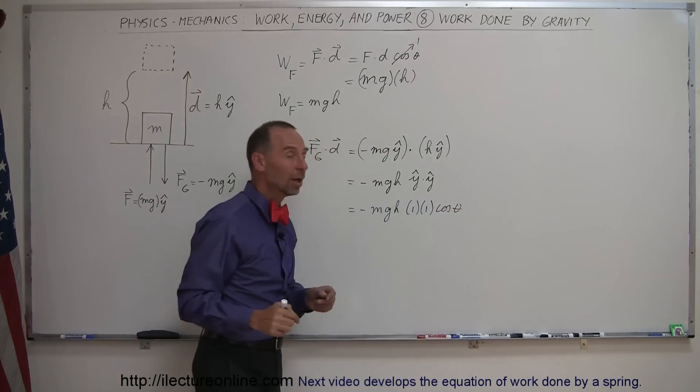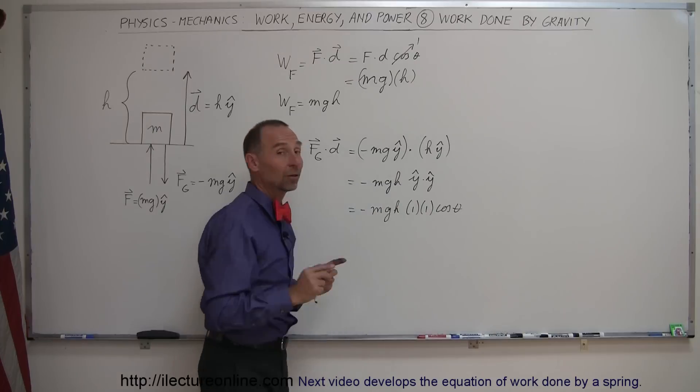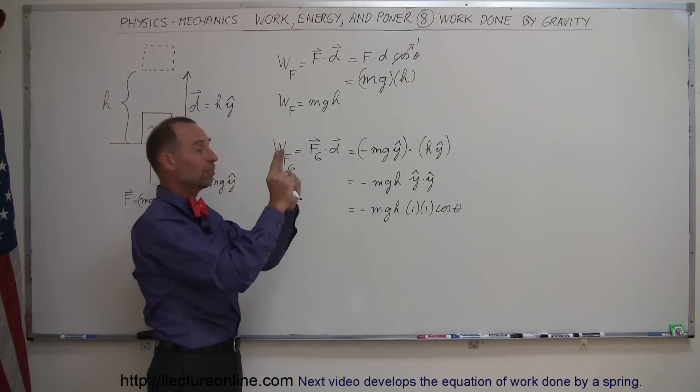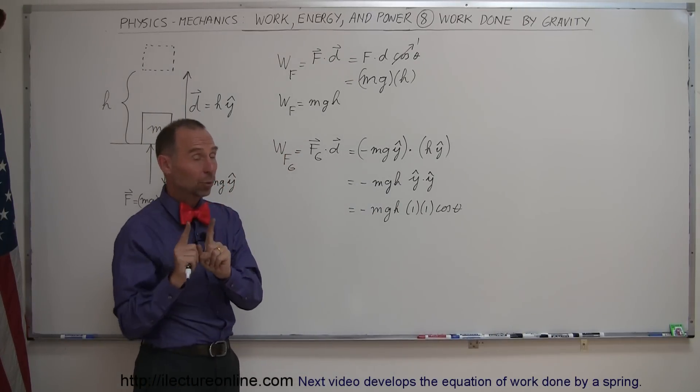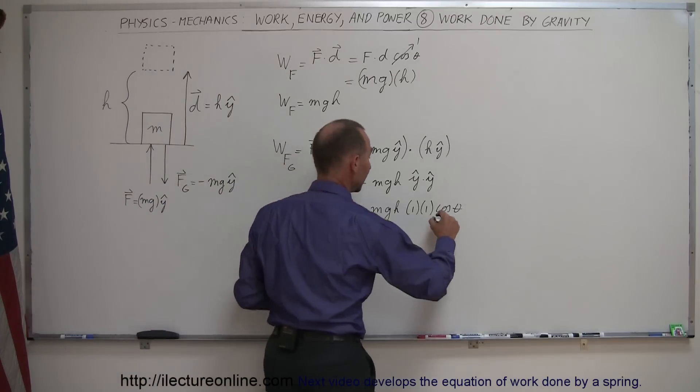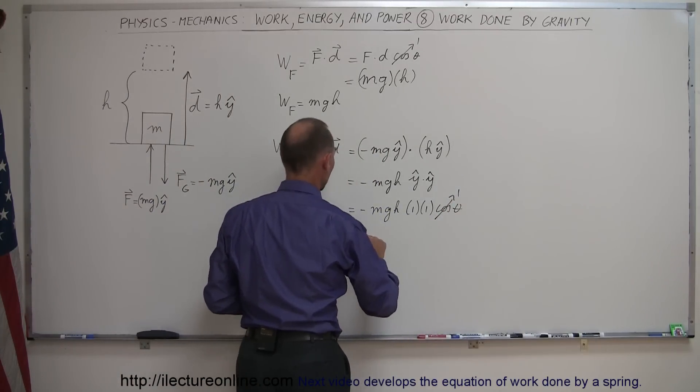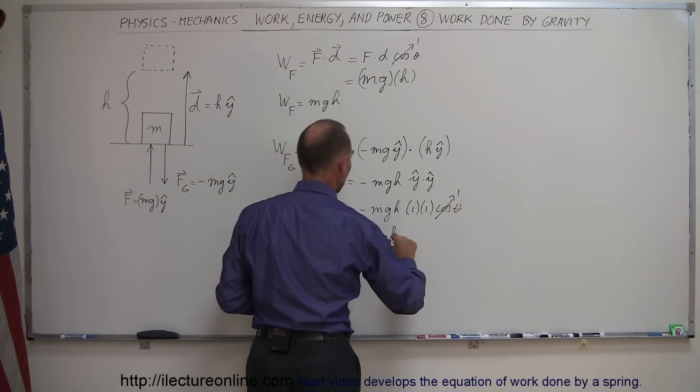Now this is the angle between these two unit vectors, and those two unit vectors are both positive, pointing upward, so therefore the angle between them is zero, and the cosine of zero is one. And so this becomes minus mgh.